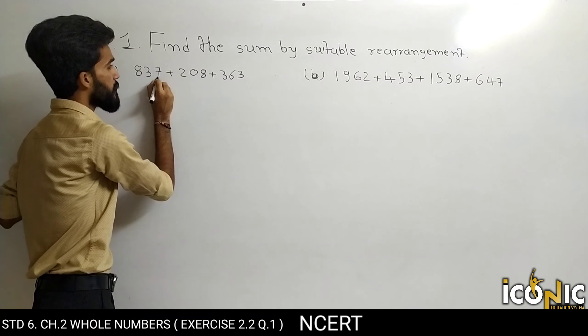837 plus 363 plus 208. Ab iska addition karenge: 7 plus 3 is 10, aaya 0, yahan par 1 carry. 6 plus 3 is 9 aur ek 1 carry, wapas 1. 3 plus 8 is 11 aur ek 1, 12. Toh yeh mila 1200 plus 208. Chalo iska addition karte hain: 8 plus 0 is 8.